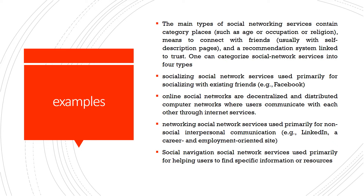For example, LinkedIn is for career or employment opportunities — where jobs are available. If you submit your resume or bio-data on LinkedIn, it will automatically search for appointments and show you where vacancies are available. Social navigation networks are primarily used for helping others find specific information or resources. Facebook, WhatsApp, and LinkedIn are some examples of social networks.